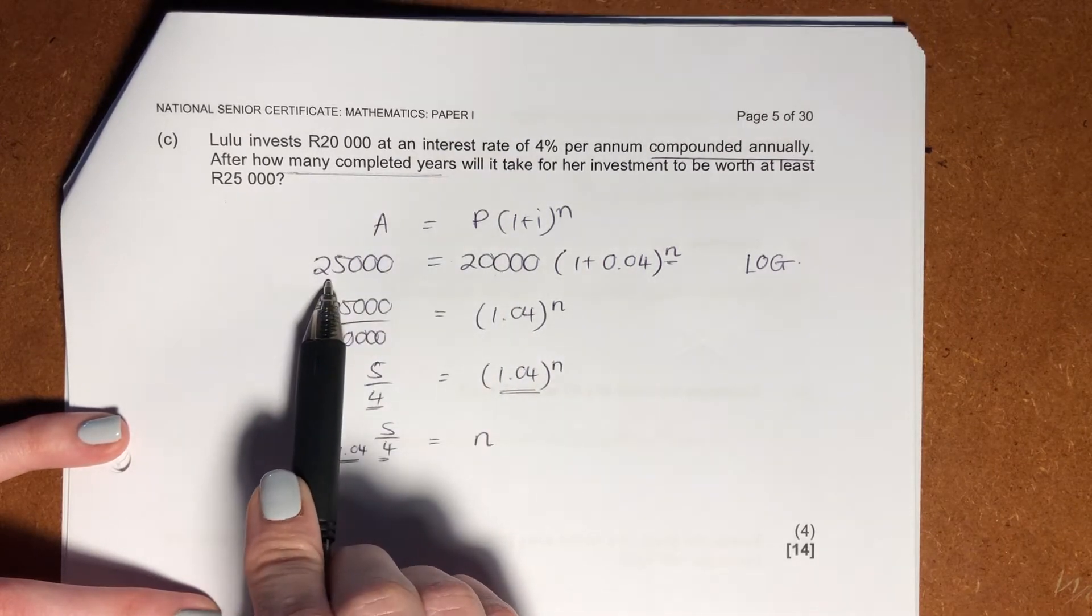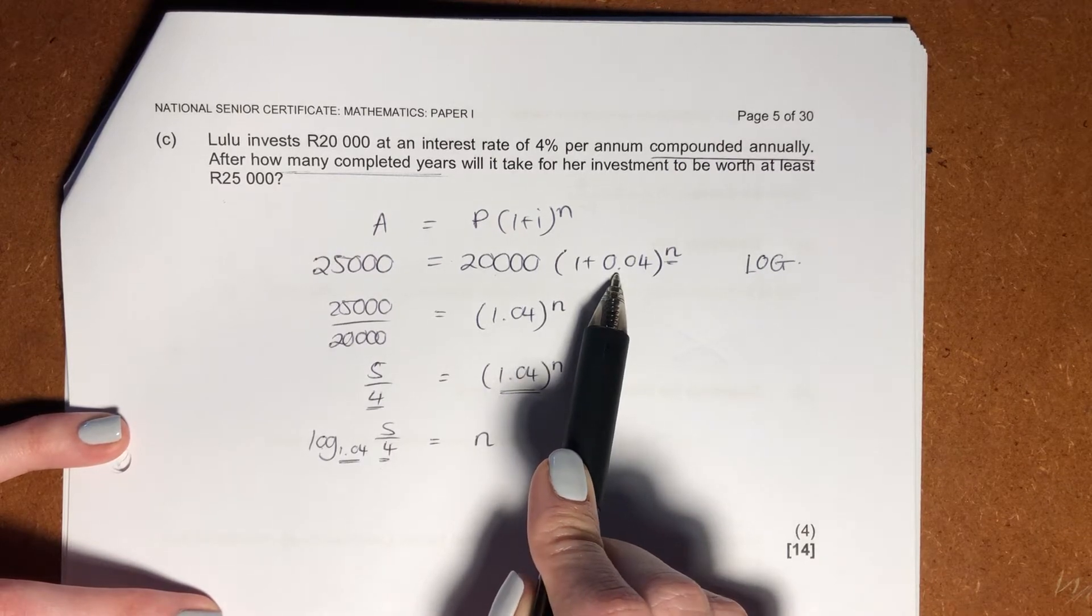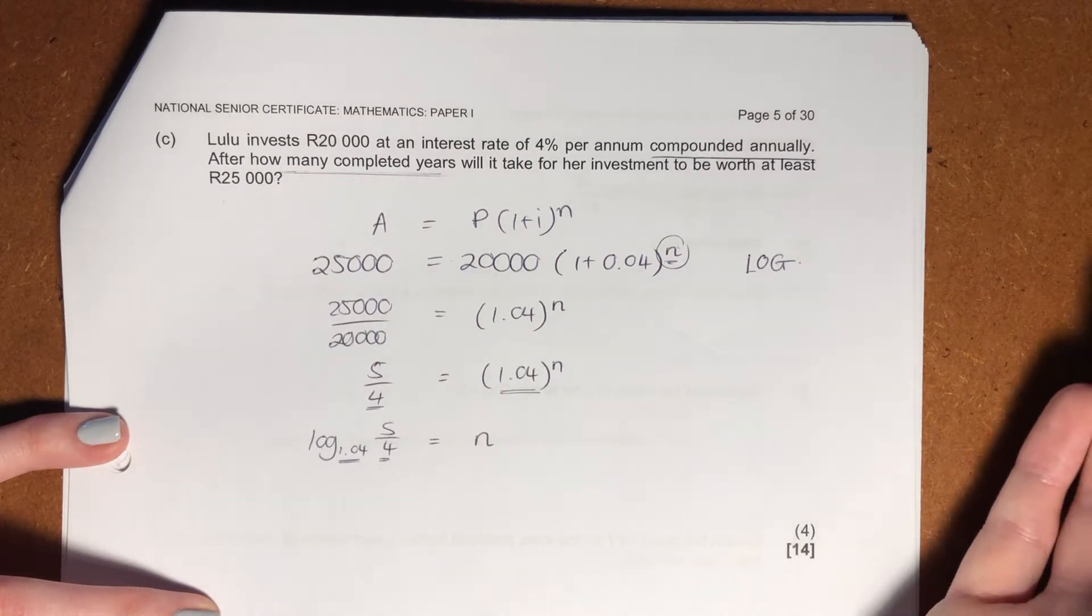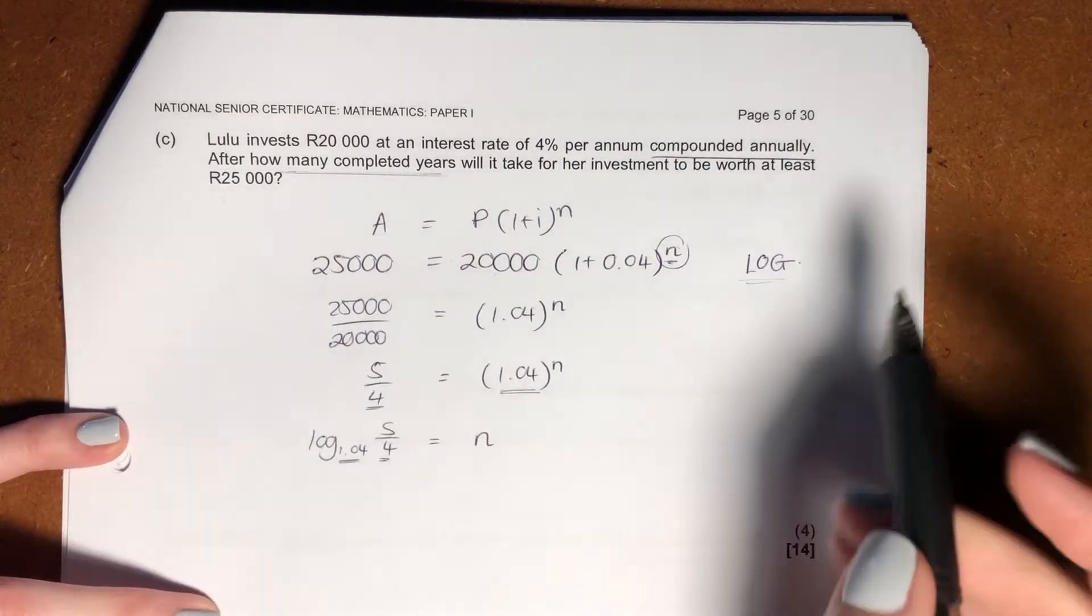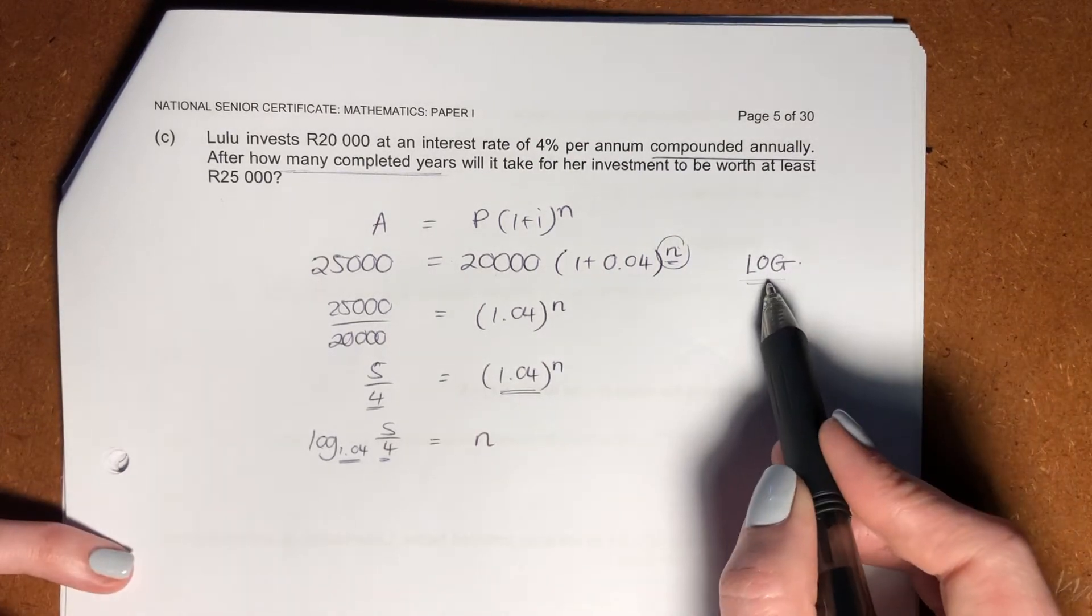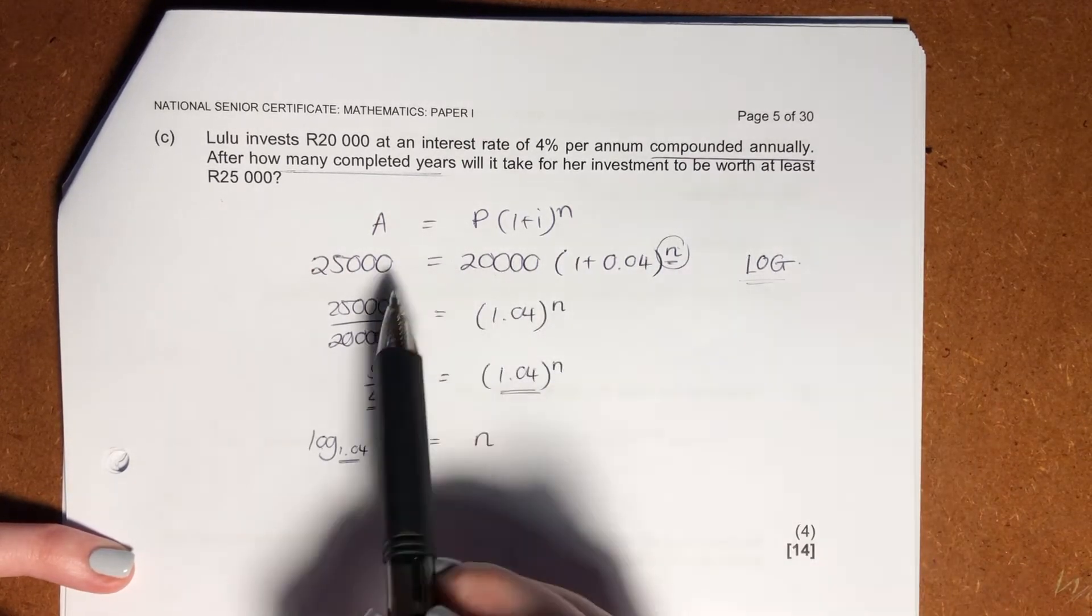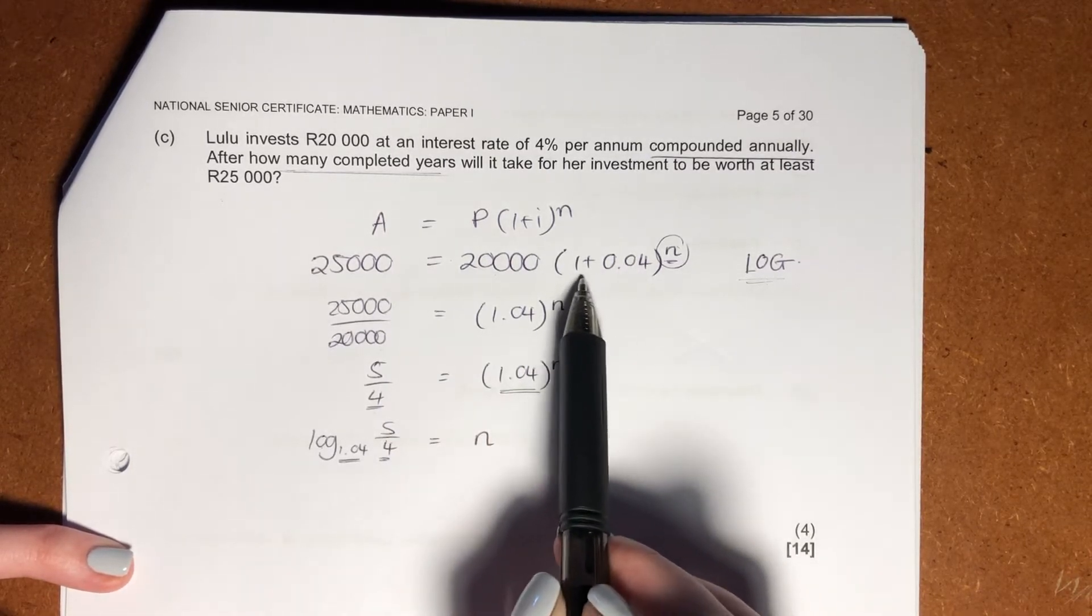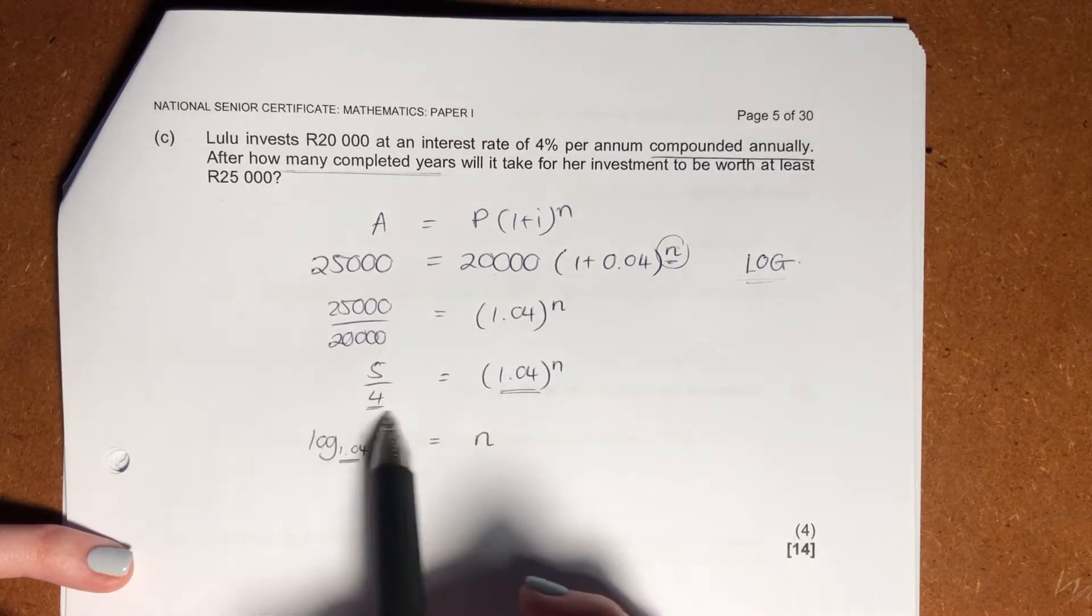I started with 20,000. I want 25,000. My interest rate was 4%, which can be written as 0.04. And I want to solve for n, which is my time period, which is my exponent. So we know that we're going to be using our good old friend log, because he helps us solve for unknown exponents. So what we're going to do is we're just going to tidy up a bit. 25,000 divided by 20,000, you get 5 over 4. I just sort of cleaned up my bracket here, and then I got to the stage here.